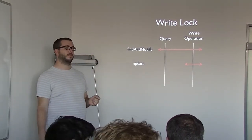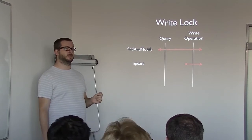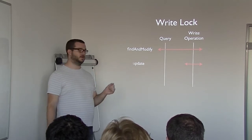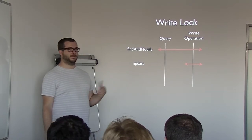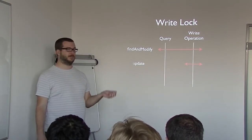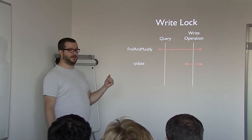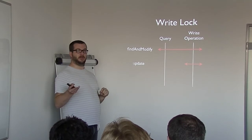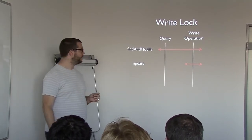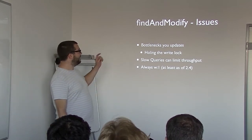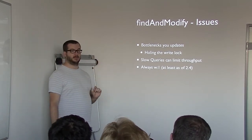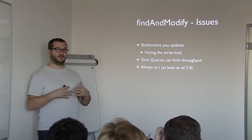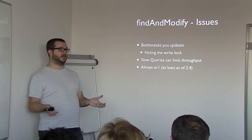Is the lock at the collection level or database level? It's a database lock. As of 2.2, MongoDB has database-level locking. In the future it will probably be lower-level locking, but at the moment it's database-level. So if you're doing Find and Modify on one database, it doesn't lock other databases — it's not a global write lock. One of the things that can happen is you can bottleneck your updates, because you have to hold the write lock for a longer period and other things cannot write to the database while that's happening.